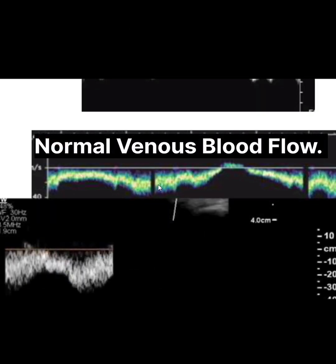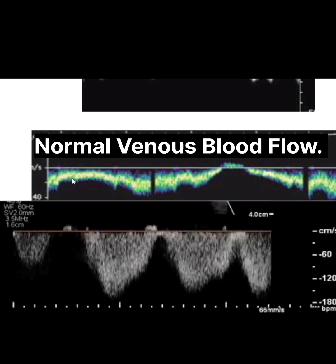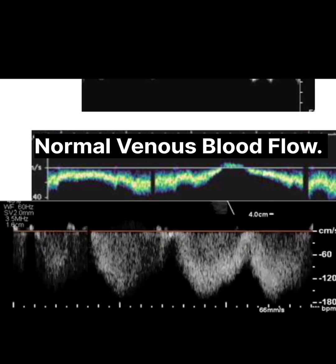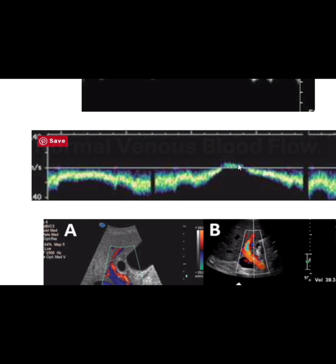Normal blood flow further away from the heart will have respiratory phasic blood flow, where blood flow is more affected by respirations. If recorded in the legs, increased flow occurs during expiration and decreased flow during inspiration. If recorded in the arms, neck, and head, blood flow increases during inspiration and decreases during expiration.